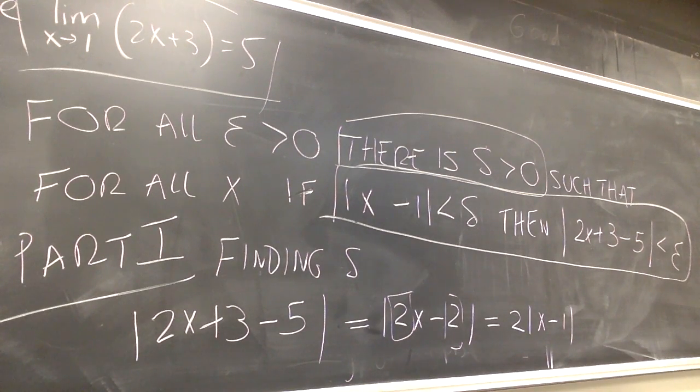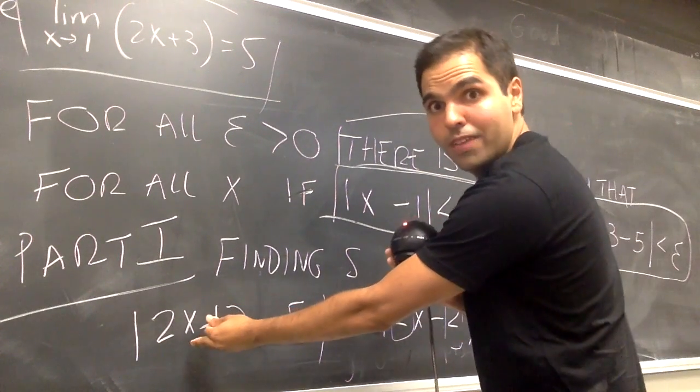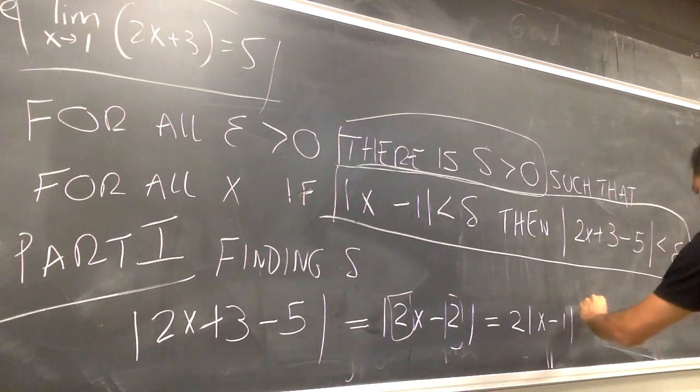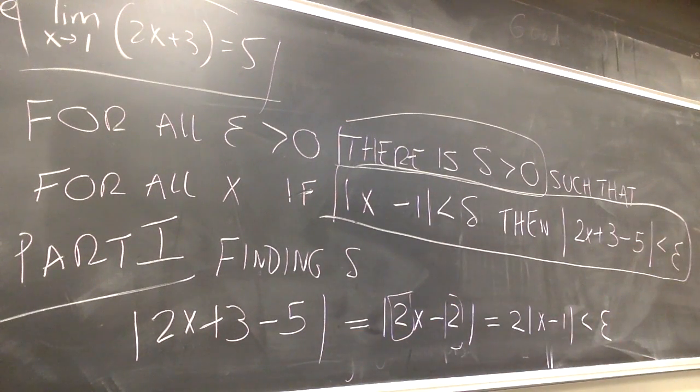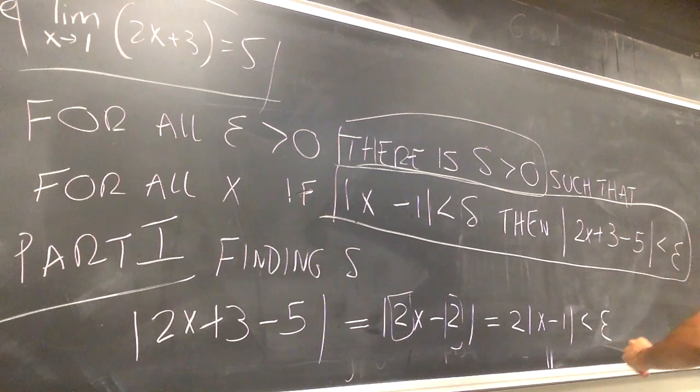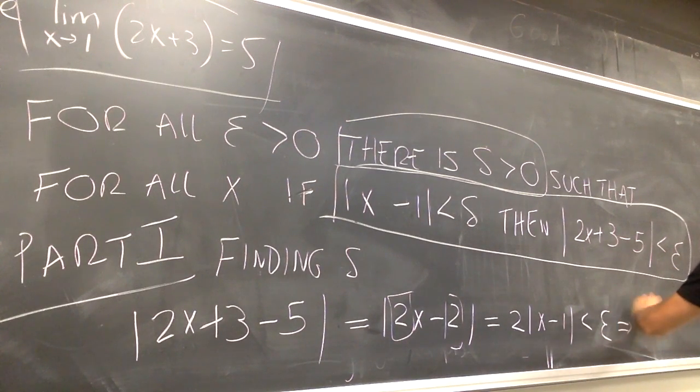And now, let's focus on our goal. What do we want ultimately for this to happen? We want 2x plus 3 minus 5 to be less than Epsilon. So, let this whole expression be less than Epsilon.